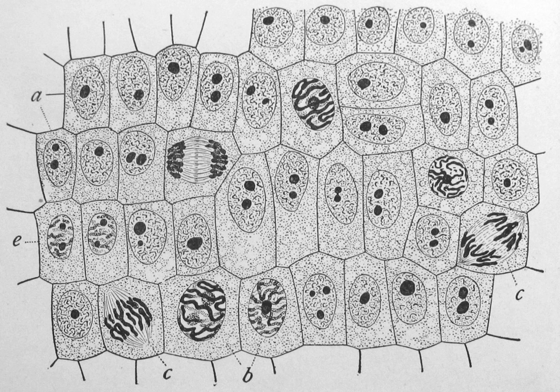Prokaryotes include bacteria and archaea, two of the three domains of life. Prokaryotic cells were the first form of life on Earth, characterized by having vital biological processes including cell signaling. They are simpler and smaller than eukaryotic cells, and lack membrane-bound organelles such as a nucleus. Most prokaryotes are the smallest of all organisms, ranging from 0.5 to 2.0 micrometers in diameter.